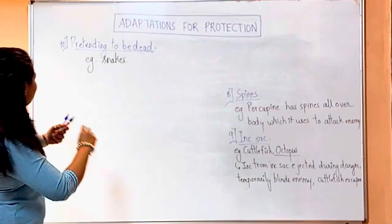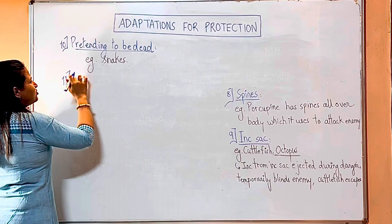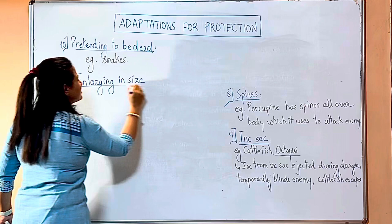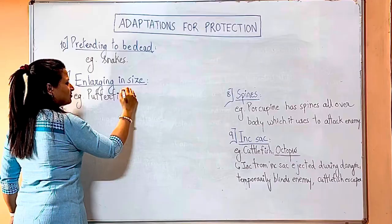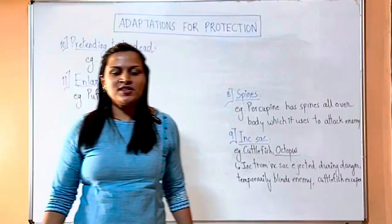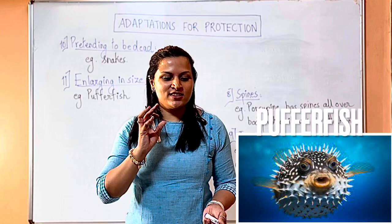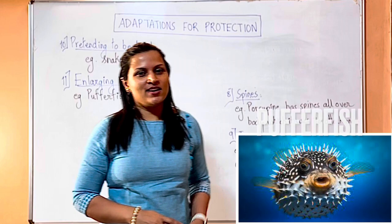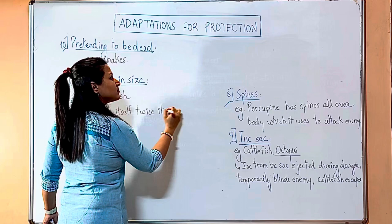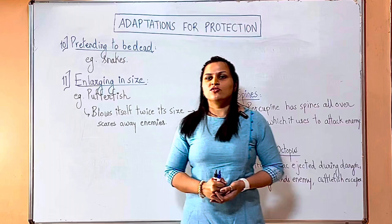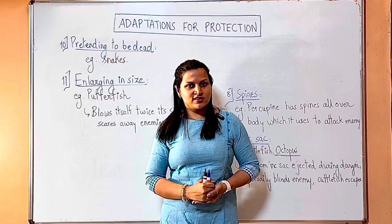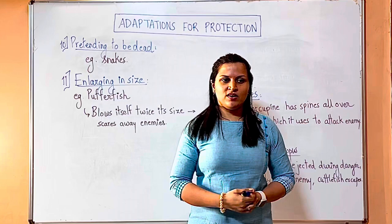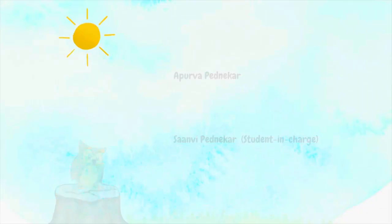Finally, enlarging in size: the puffer fish is actually a small-sized fish, but it can blow itself up to twice its size when it sees approaching danger, scaring the enemy away. These are all the adaptations in animals for protection from predators. There are several others, but these are the ones you need to remember. That is it from today's lecture — see you in the next lesson!